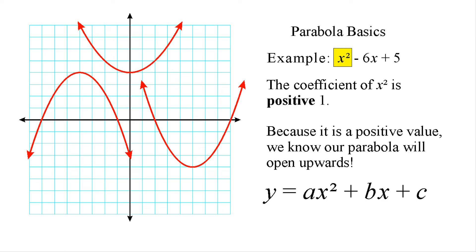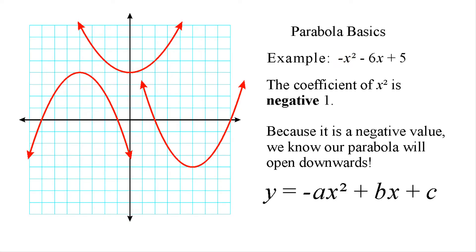All right, for example, let's take a look at the equation x-squared minus 6x plus 5. Now, if we take a look at the x-squared term, there's no number directly in front of there, which means the coefficient is actually 1. So because it is positive 1, that would mean that our parabola is going to be opened upwards because the a value is a positive value. Now, if the term in front of x-squared is a negative value, such as negative 1 for a coefficient, that would automatically mean that our parabola is going to be opened downwards.